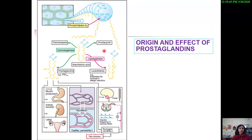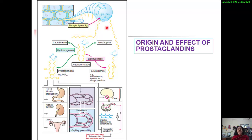NSAIDs inhibit prostaglandin production by inhibiting the cyclooxygenase enzyme. The substrate for the cyclooxygenase enzyme is obtained from arachidonic acid, which is formed in the membrane phospholipids. This acid is acted upon by the enzyme phospholipase A2, and following that, the arachidonic acid products are diverted either into the cyclooxygenase pathway or the lipoxygenase pathway. The cyclooxygenase pathway is responsible for the production of prostaglandins; the lipoxygenase pathway is responsible for the production of leukotrienes.